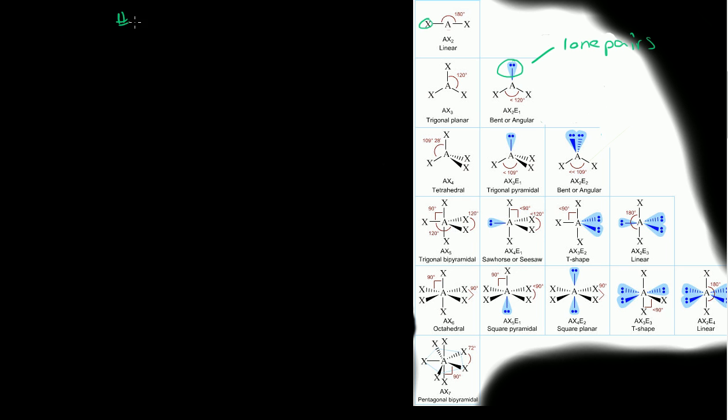If we're given any molecule, the easiest way to determine whether it's tetrahedral, trigonal planar, or octahedral is to use this simple diagram. We'll have the number of lone pairs on one axis, and on the other side the number of — I'll call them valence atoms, even though that's probably not the correct term. Like in H2O, the two H's would be the valence atoms.